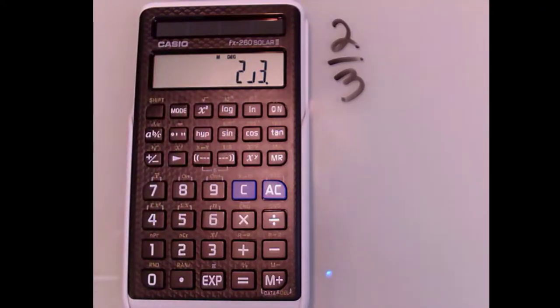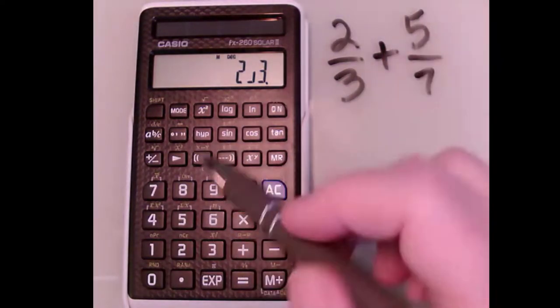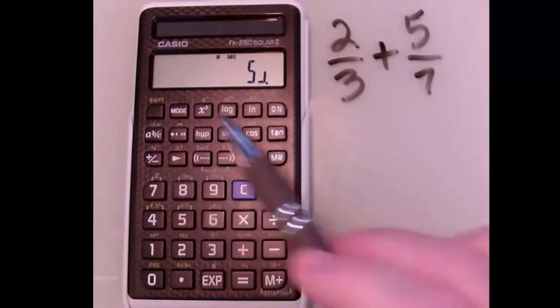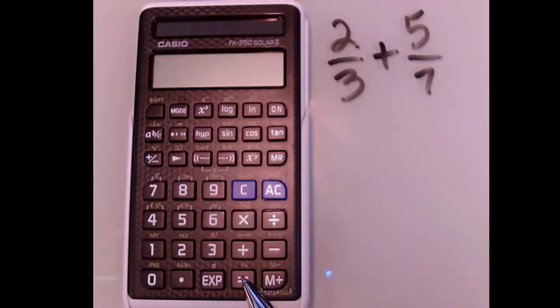Now if I want to do a calculation, let's say I want to add 5/7 to that. I'm going to use normal addition, but now I'm going to enter this fraction 5 over 7. So I enter 5, the numerator first, hit that fraction button to show we're entering a fraction, then 7, and when I hit equals,